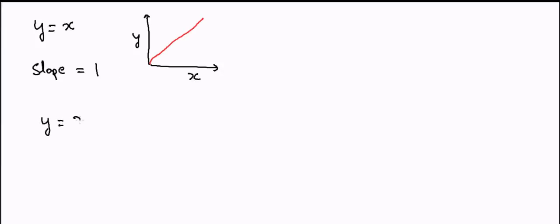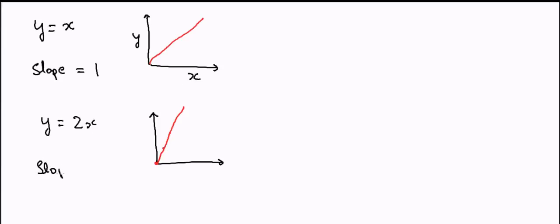Now if we have another equation where y is equal to 2x, when y is equal to 0 then x is also 0, but when x is equal to 1, y will be 2, and when x is equal to 3, y will be 6. So the line will be more steep, and in that case we say that the slope has increased because the line is steeper. The slope here will be 2 — the coefficient of x.